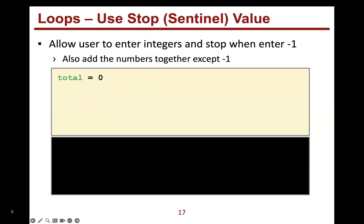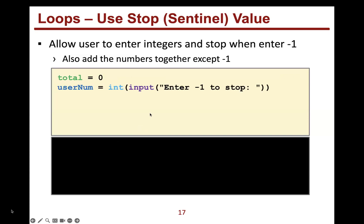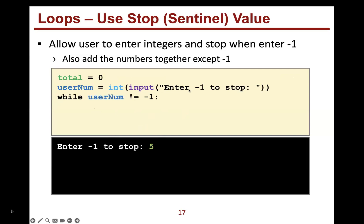Here's a sentinel value example. We allow the user to enter integers and stop when they enter negative one. To make it more interesting, we also add the numbers together — but we never add the sentinel value itself into the total. I create a total variable, ask for input, convert it to an integer. While user_num doesn't equal negative one, I add user_num to total, then ask for input again. If I don't ask for input again, I'm stuck in an infinite loop.